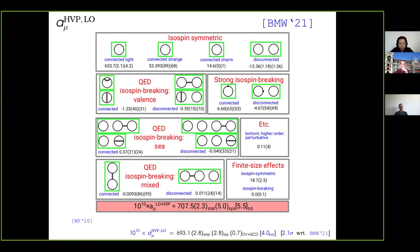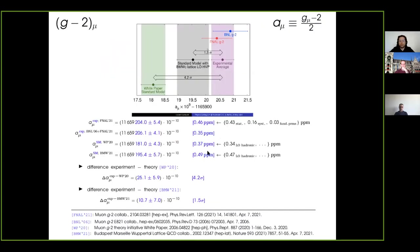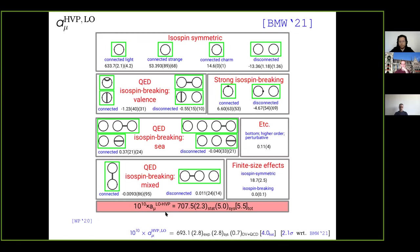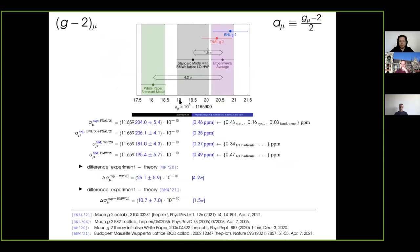This leads to a comparison with respect to the dispersive approach result: it is a 2.1 sigma difference, and also a 2.1% difference in the sense that the ratio is 2.1%. So the white paper result comes from the dispersive approach, and the BMW result sits in the middle between it and the experimental value.